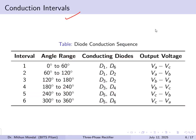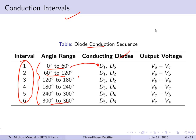The diode conduction scheme can be viewed in tabular format with 6 intervals, each spanning 60 degrees — from 0 to 60, 60 to 120, and so on through 300 to 360 degrees. For example, from 0 to 60 degrees D1 and D6 conduct; from 60 to 120 degrees D1 and D2 conduct, producing the voltage across terminal AB. Each diode conducts for a total of 120 degrees, and the output is the line voltage across the terminals.